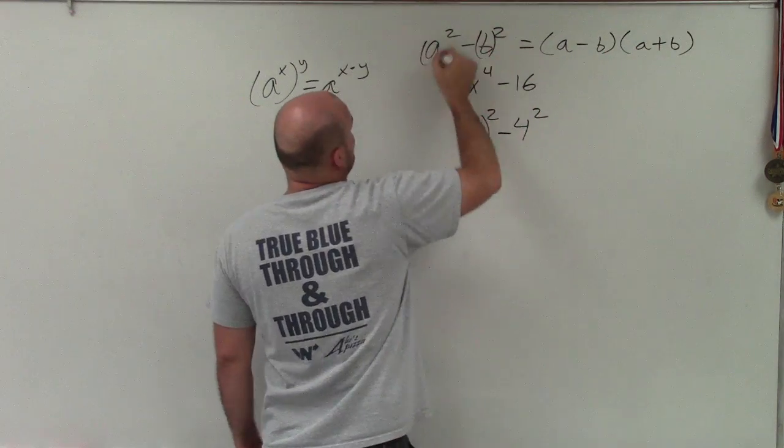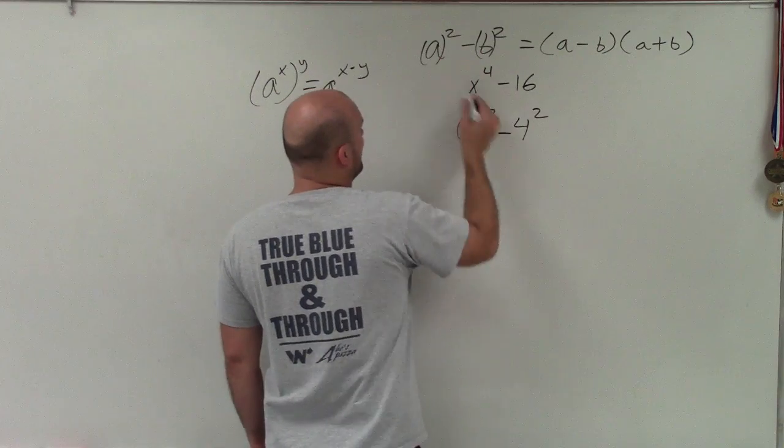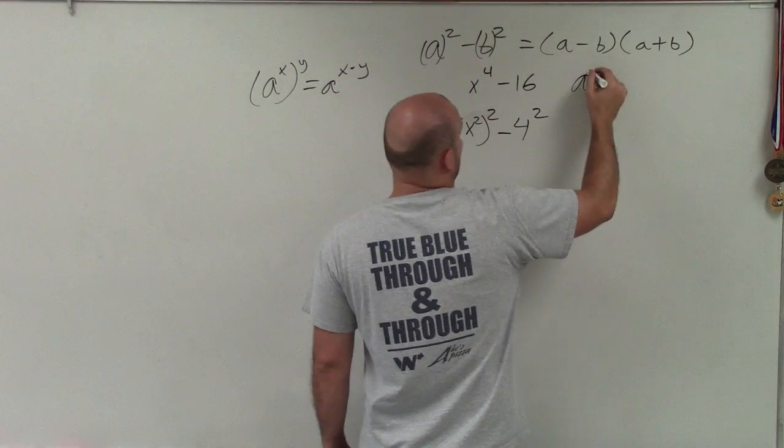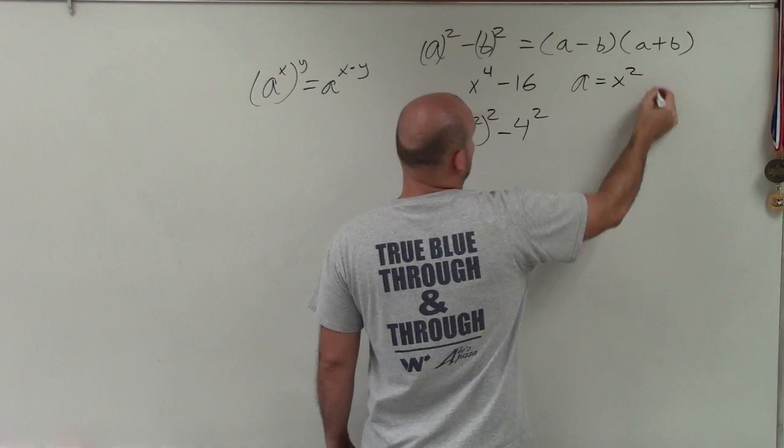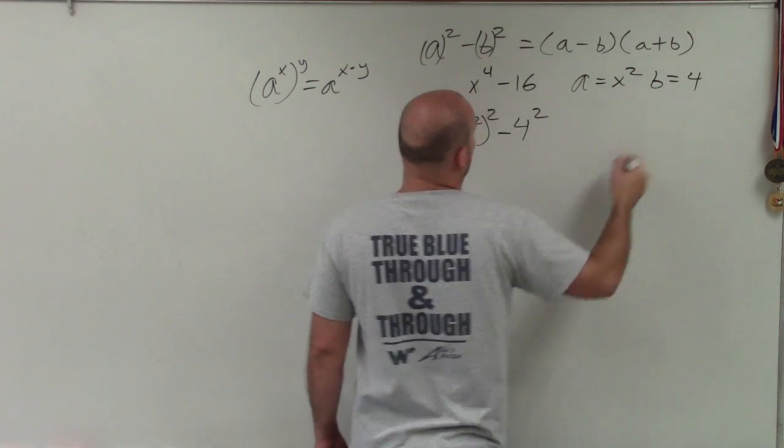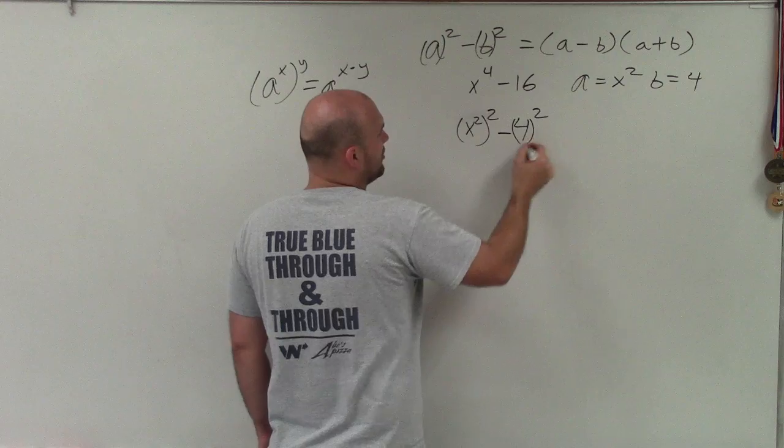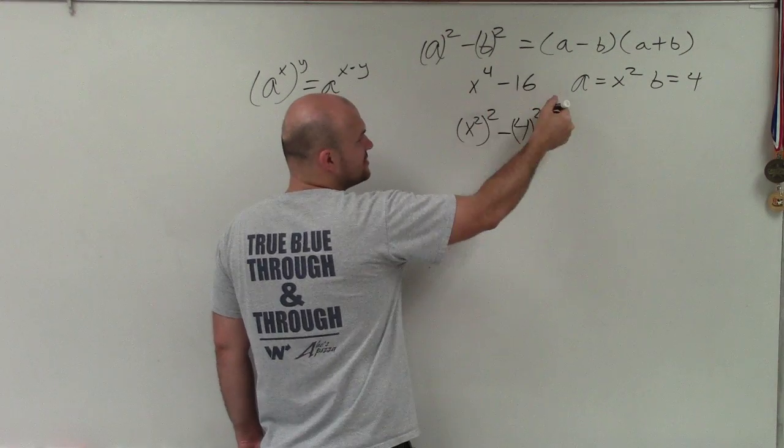So you can see here, I got factor and factor. So therefore, all I simply need to do is label, we'll say, a is then equal to x squared, and b is equal to 4, right? Because those are both my terms that are being raised to the second power.